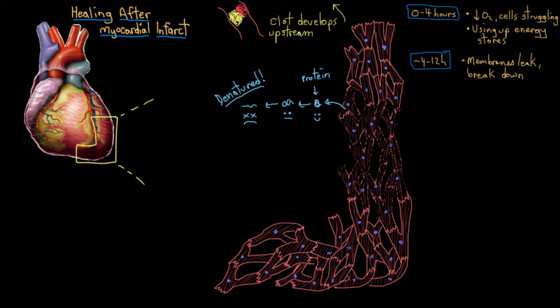This process of the cardiomyocytes dying but still having their architecture preserved is called coagulative necrosis. Necrosis referring to the death of your cells and coagulative referring to this sort of jelly-like substance that the denatured proteins form after they break down.